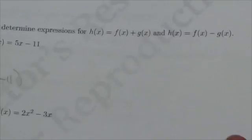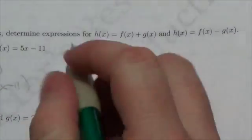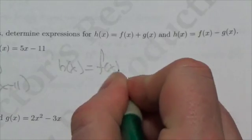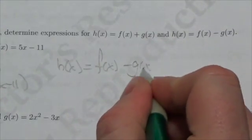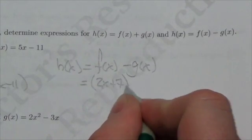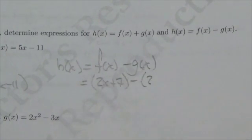Now the second h(x) that they want us to define is going to be f(x) minus g(x). Same as before, that'll be 2x + 7 minus,